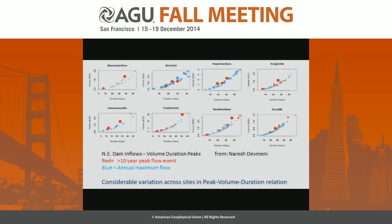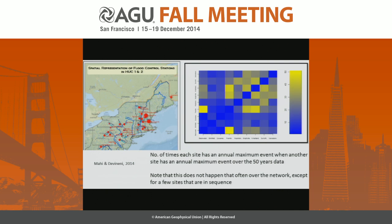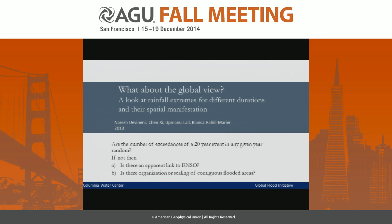If you look at a whole bunch of gauges in a region there is considerable variety in their peak flow, volume, and duration relationships gauge by gauge. This next slide from the northeast U.S., work done by Naresh Devineni, shows whether in a particular annual maximum event, if it's occurring at one of those eight gauges in the region, do the others experience it also. Very few of them consistently experience that — so that's where the idea of looking at network properties rather than point properties comes in.